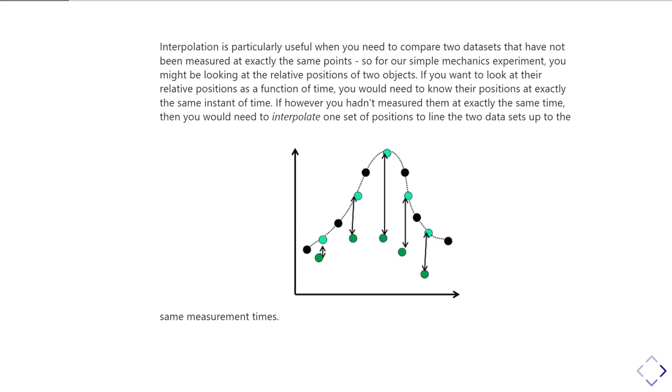Instead, what you need to do is interpolate either the black dots to find where that data set would have been at the same time as the green dots, or interpolate the green dots and work out where it should have been at the time you had the black dots. Then you're in a position to compare those two sets of data. There are lots of similar circumstances where you're going to need to work out where something was at this intermediate position. Interpolation is a fact of life of dealing with experimental data sometimes, so that's why you need to know how to do this.